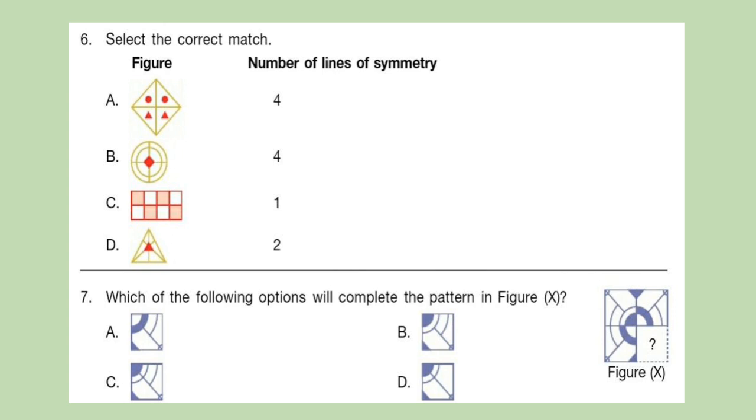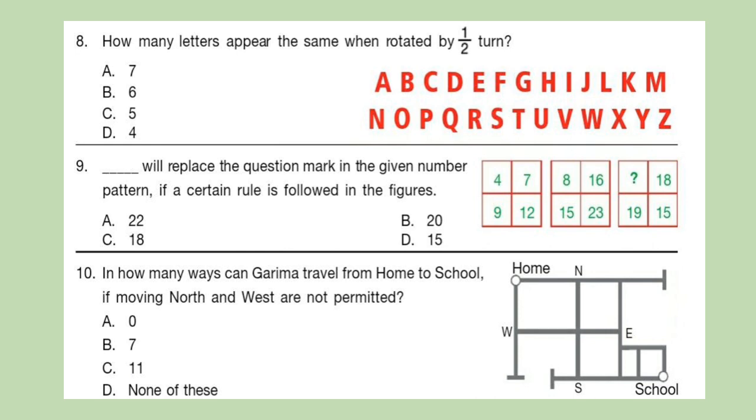Question 7: Which of the following options will complete the pattern in figure X? Question 8: How many letters appear the same when rotated half turn? Question 9: Blank will replace the question mark in the given number pattern if a certain rule is followed in the figures. Look at the options and select your answer carefully. Question 10: In how many ways can Garima travel from home to school if moving north and west are not permitted?